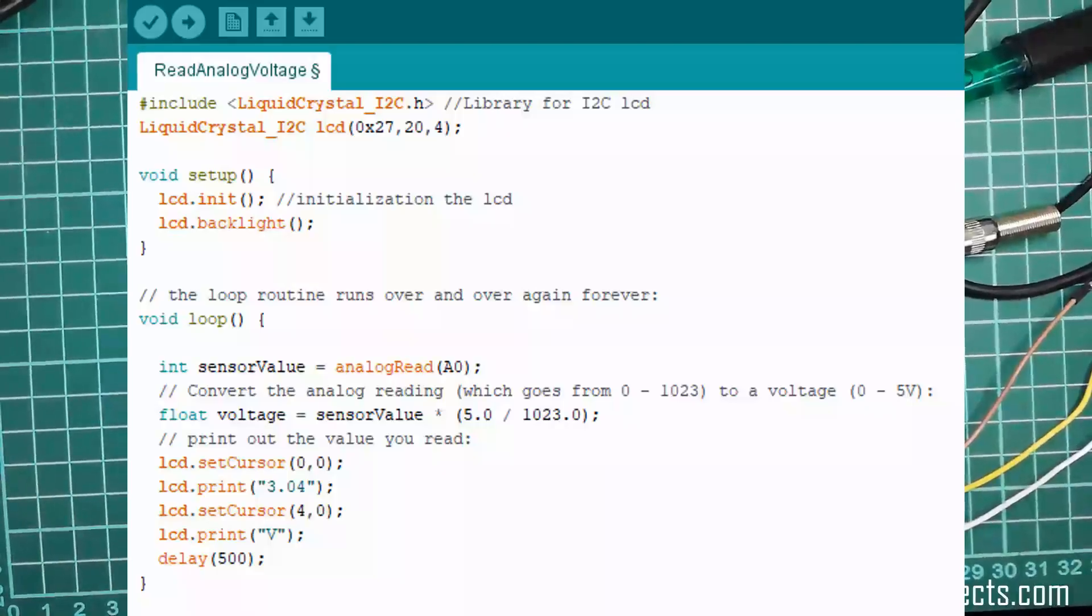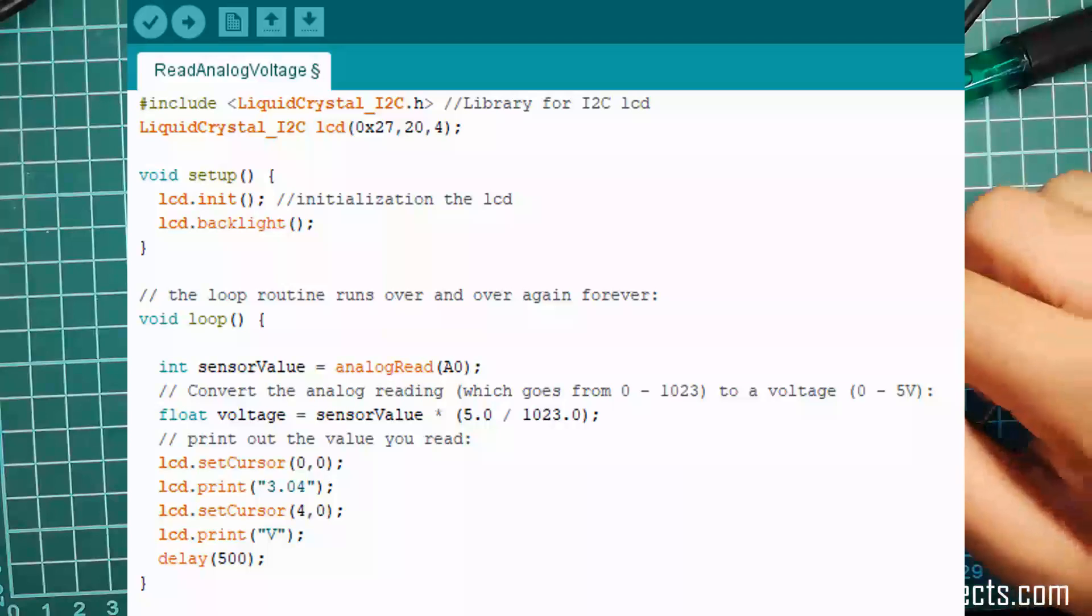Step 2: Upload the calibration program to your Arduino board. You can download the software code from the link given in description section. This program is only for voltage reading. It is not compulsory to use this program. You can also measure the output voltage at point P0 of this module using a multimeter.